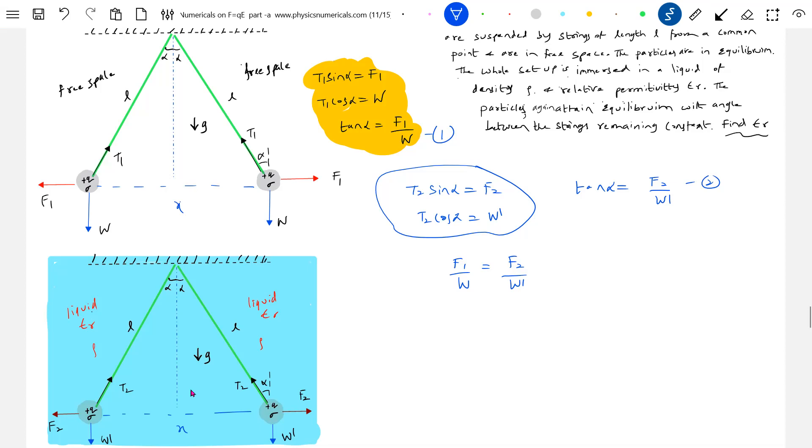Then the equations will be, looking at the first diagram, what is the first diagram? It's free space. What is the interaction force? Q squared over 4 pi epsilon_0 X squared equals W. F2 equals Q squared over 4 pi epsilon_0 epsilon_R X squared equals W dash.